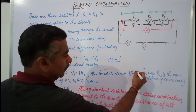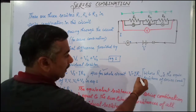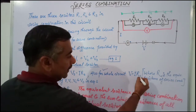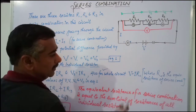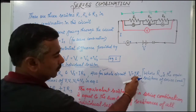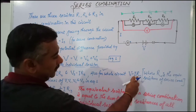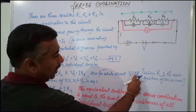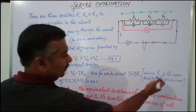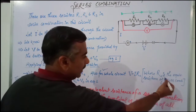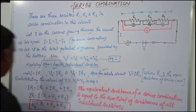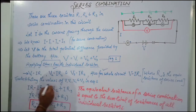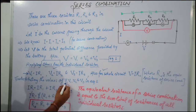Also, applying Ohm's Law to the whole circuit, the total potential drop V equals the current I multiplied by the equivalent resistance Rs of the series combination, where Rs is the equivalent resistance of the series combination.